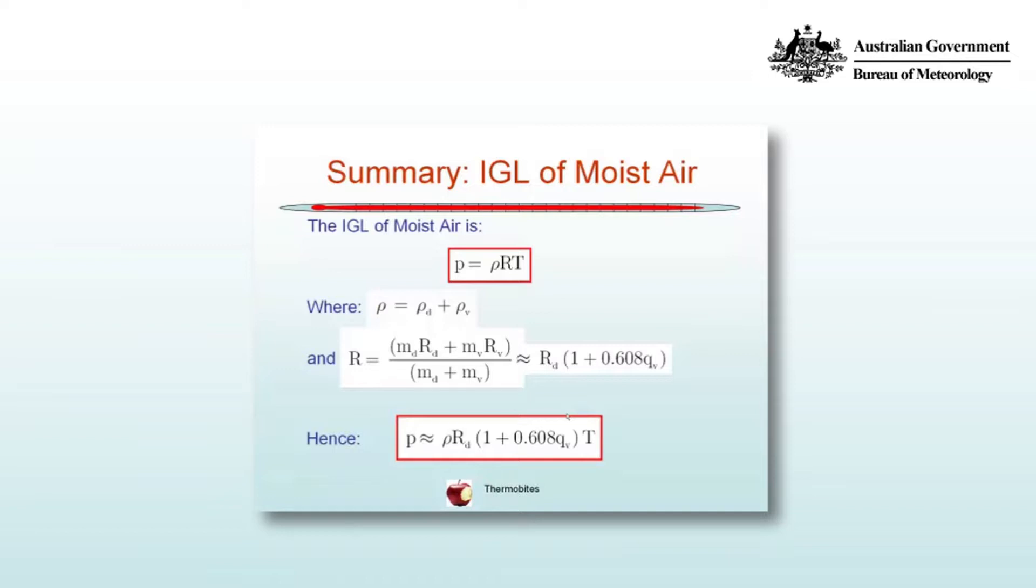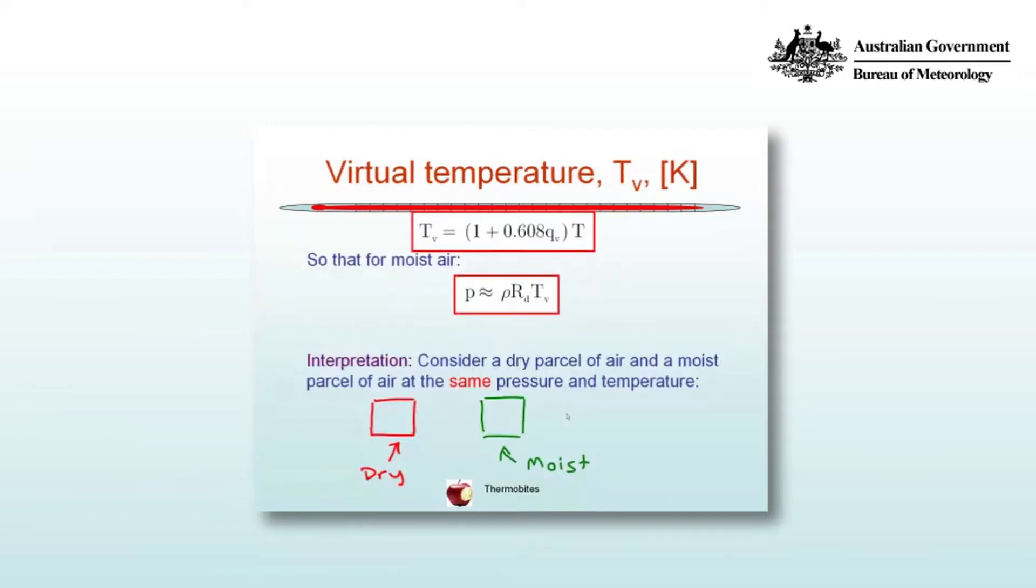And so you can write the ideal gas law as shown in the box in red at the bottom. So instead then of having a specific gas constant for moist air, let's use the specific gas constant for dry air and multiply temperature by the expression involving the specific humidity and define that as the virtual temperature.